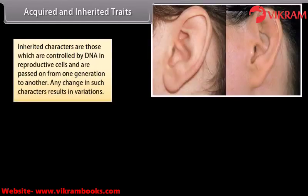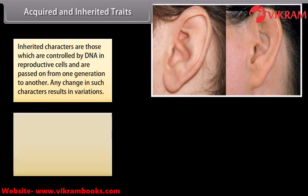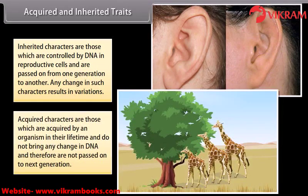Inherited characters are those which are controlled by DNA in reproductive cells and are passed on from one generation to another. Any change in such characters results in variations. Acquired characters are those which are acquired by an organism in their lifetime and do not bring any change in DNA, and therefore are not passed on to the next generation.